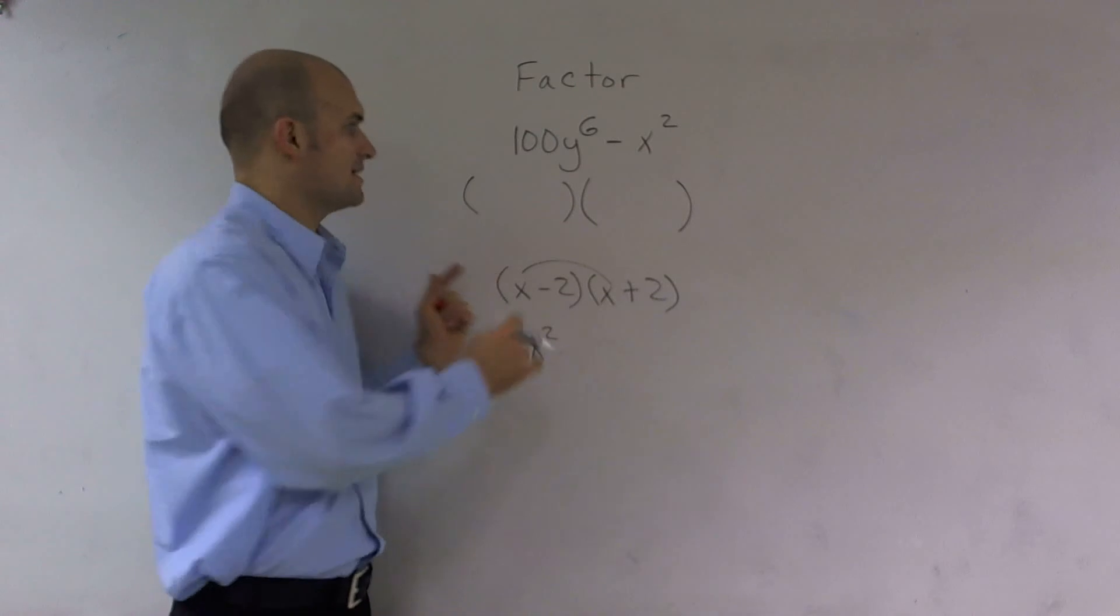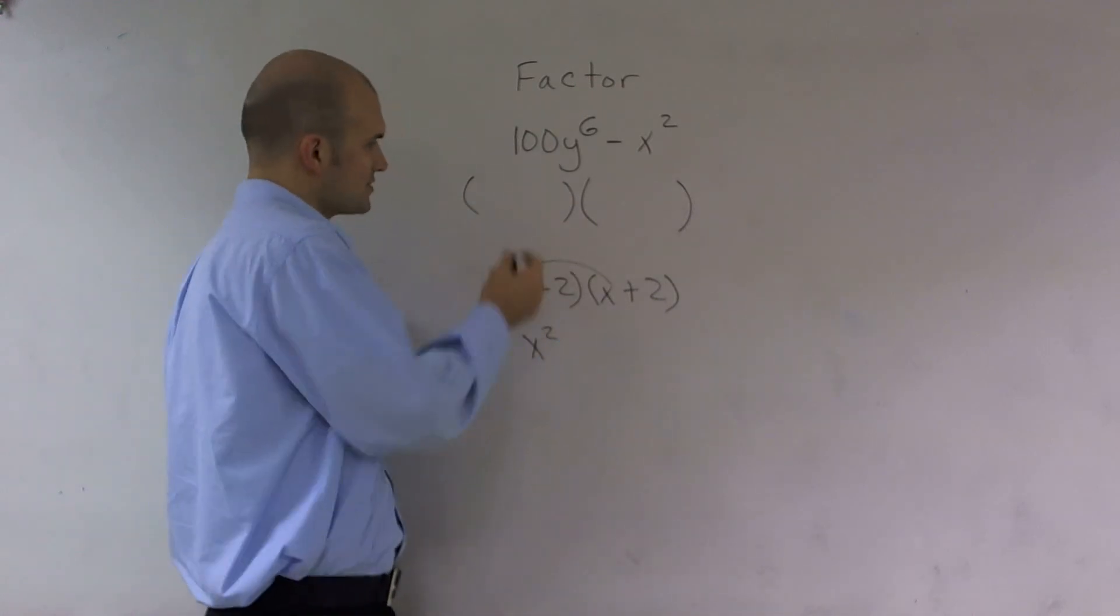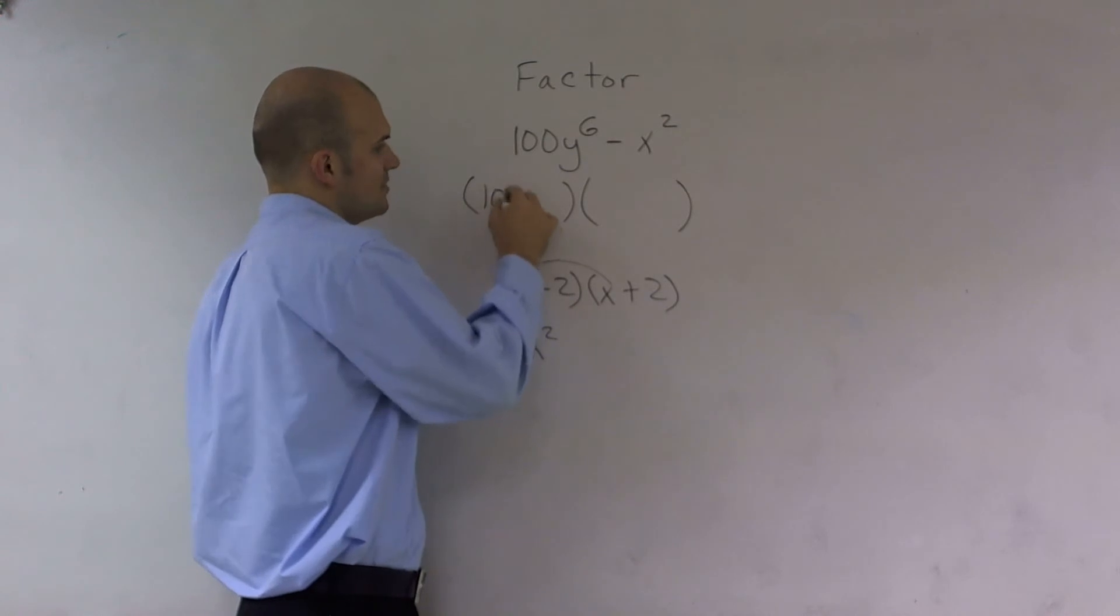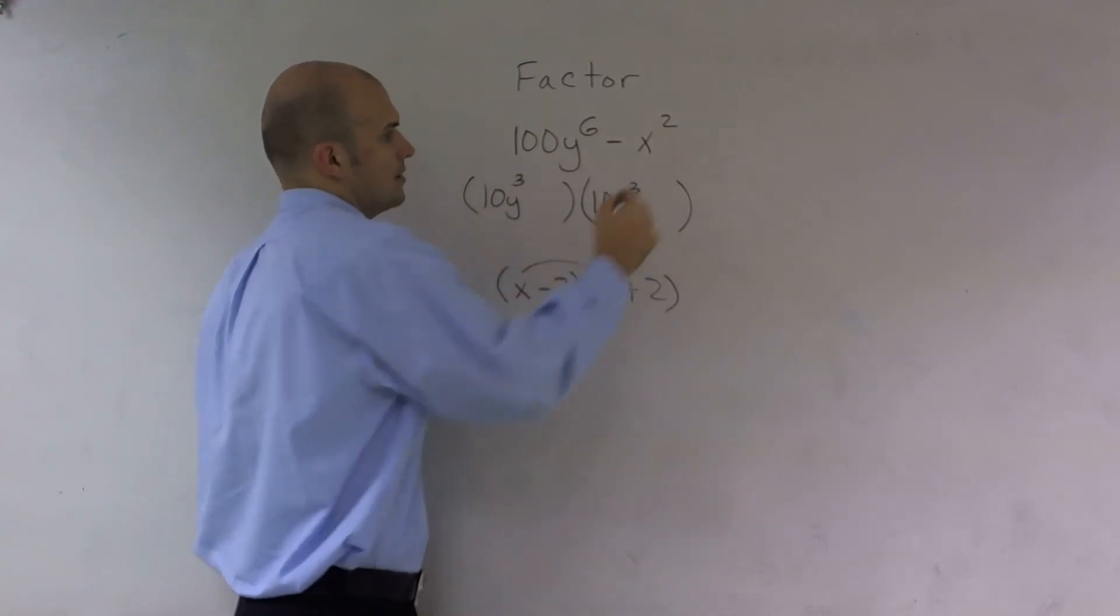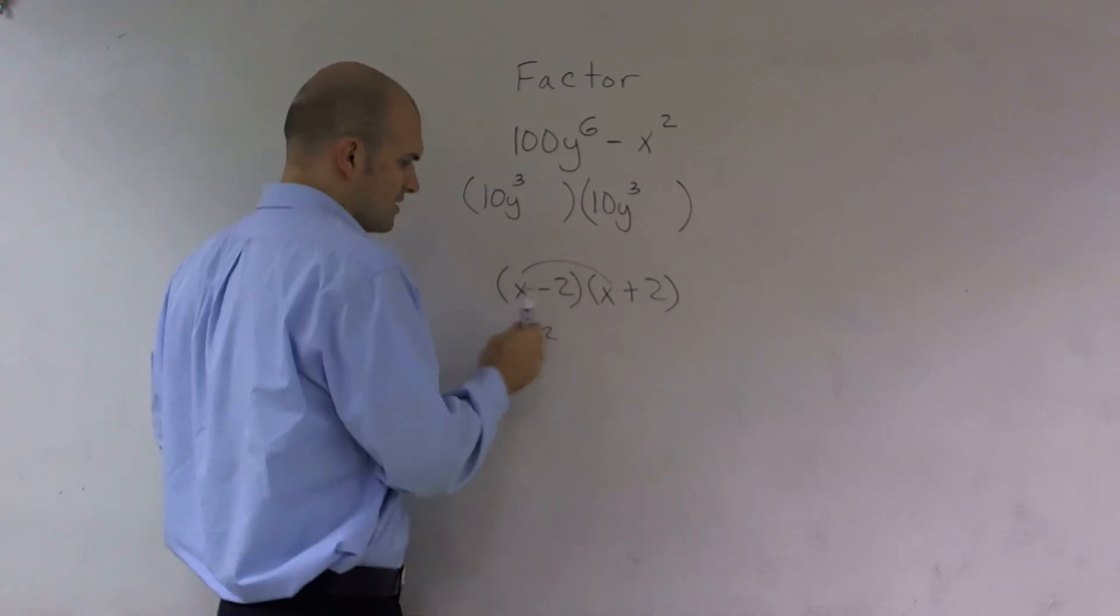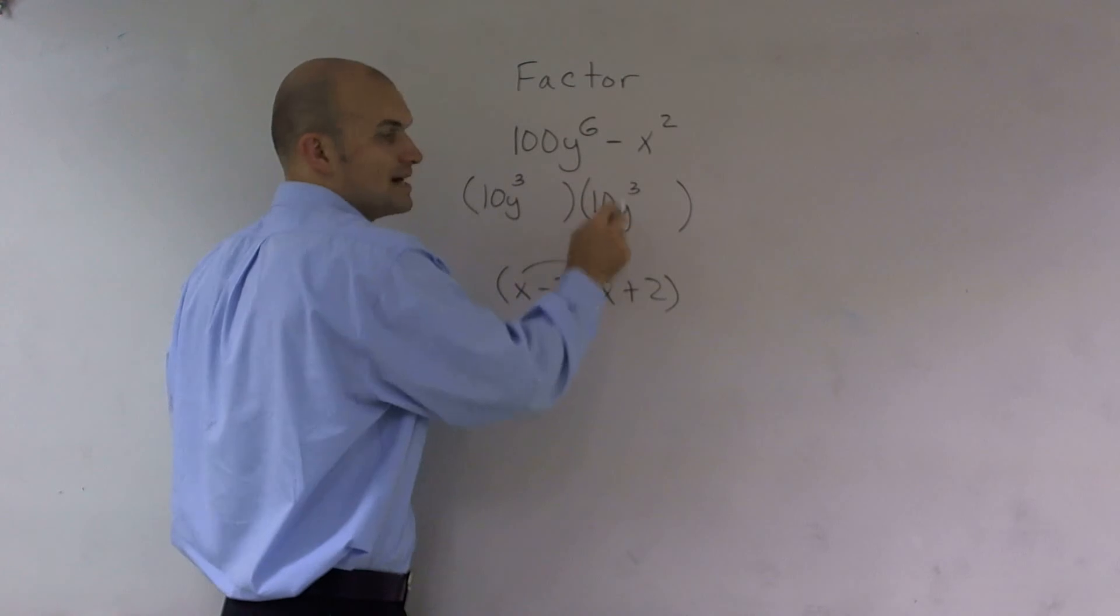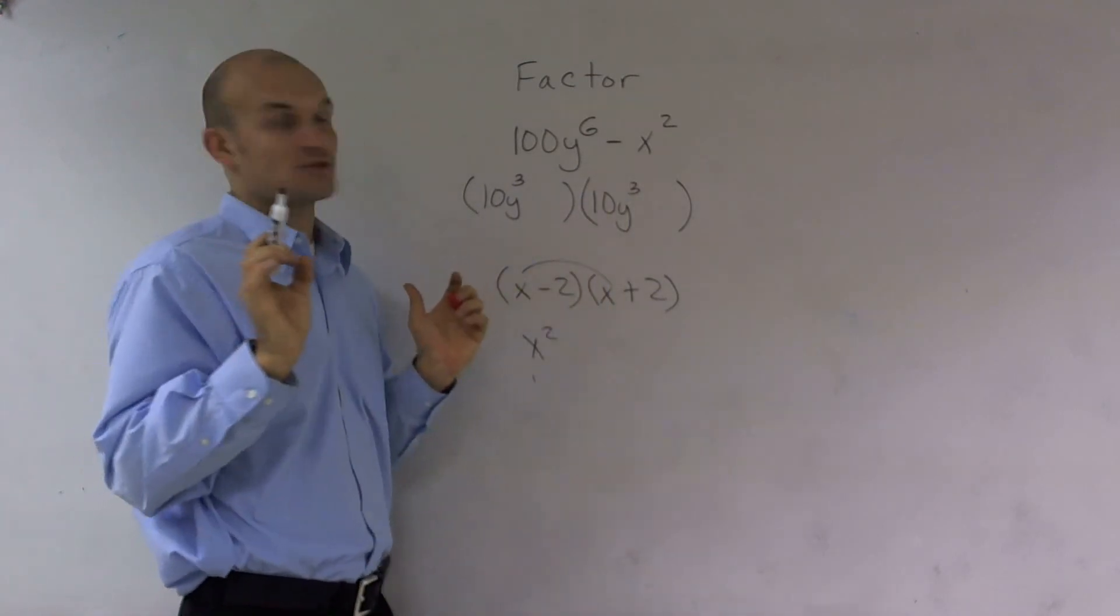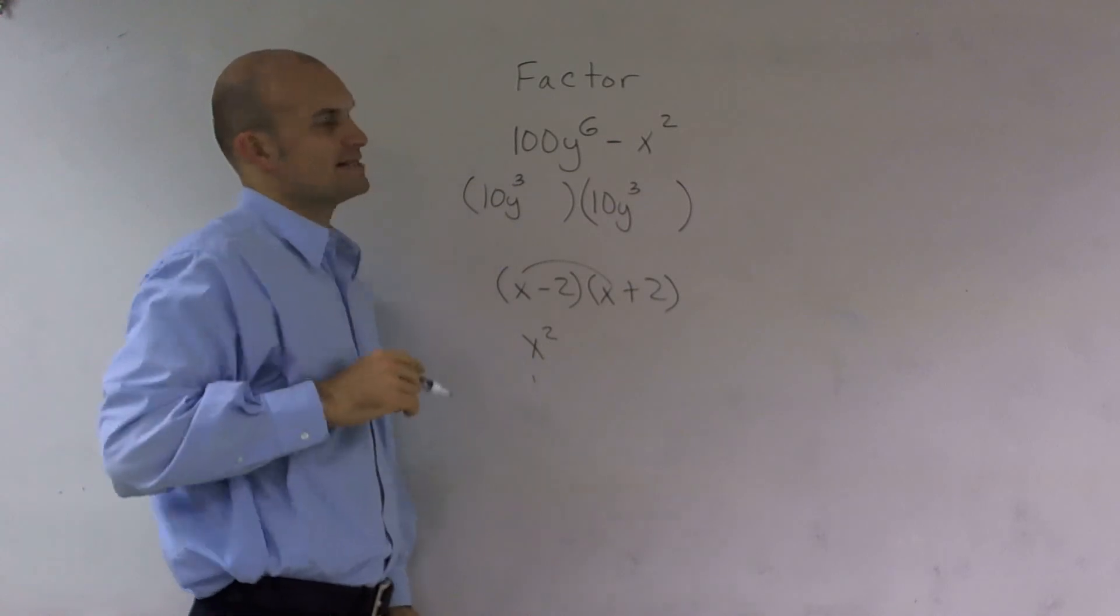So what I want to do is I want to see, can I pick out the same number that make these the same? And I say, well, actually, yeah. What if I picked 10y³? And if you think about that, 10y³ times 10y³ is 10 times 10 is 100. y³ times y³, remember, you add exponents. When you multiply, you add the exponent. So that would give me 100y to the sixth.